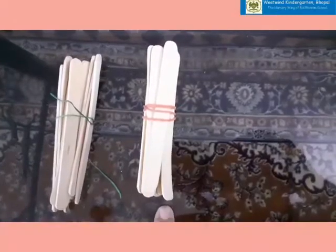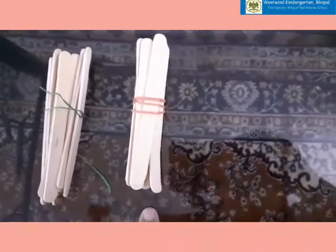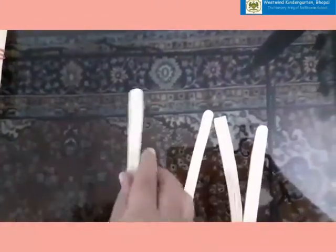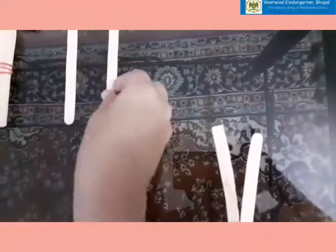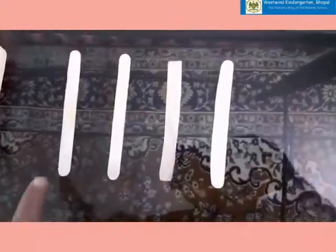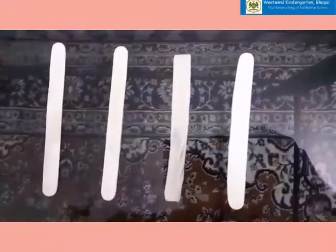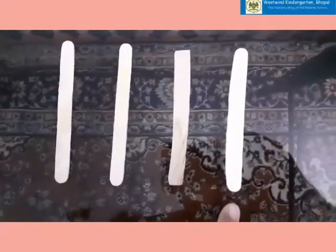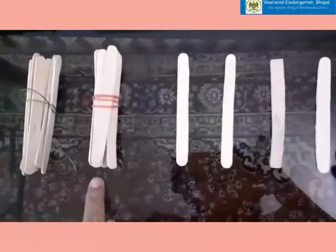Now can you see? 1, 2, 3, 4. How many? 1, 2, 3, 4. These are 4 ice cream sticks. 2 bundles of ice cream sticks and 4 are extra.